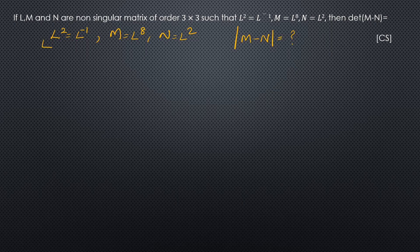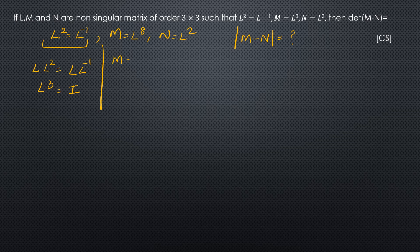From L squared equals L inverse, multiply both sides by L: L cubed equals L times L inverse, which is the identity matrix I. Now M equals L raised to 8, which can be written as (L cubed) squared times L squared. Since L cubed equals I, we get I squared times L squared, which equals L squared.